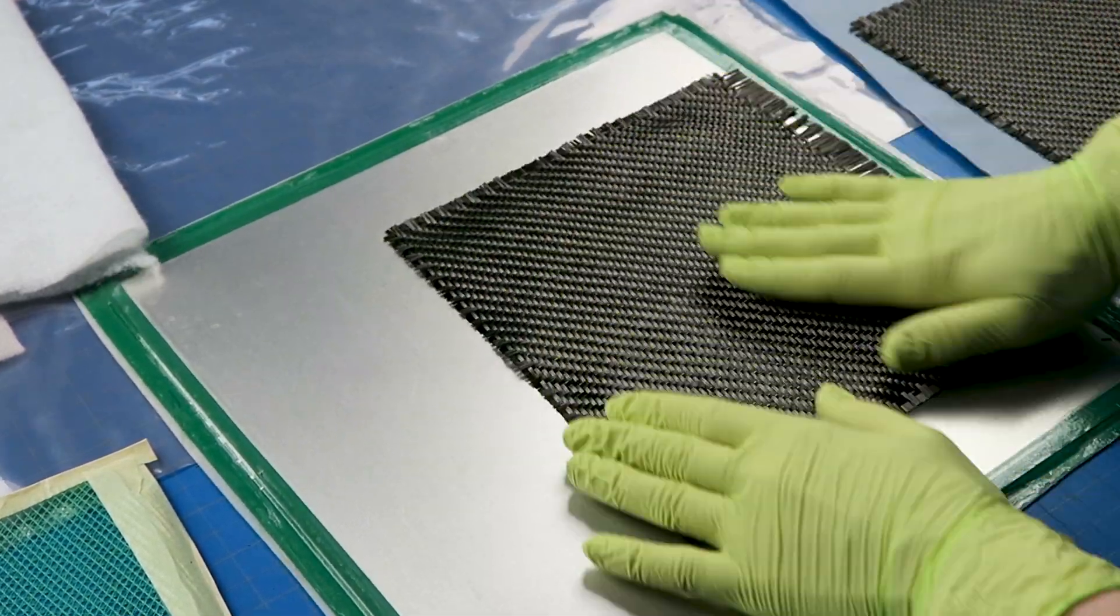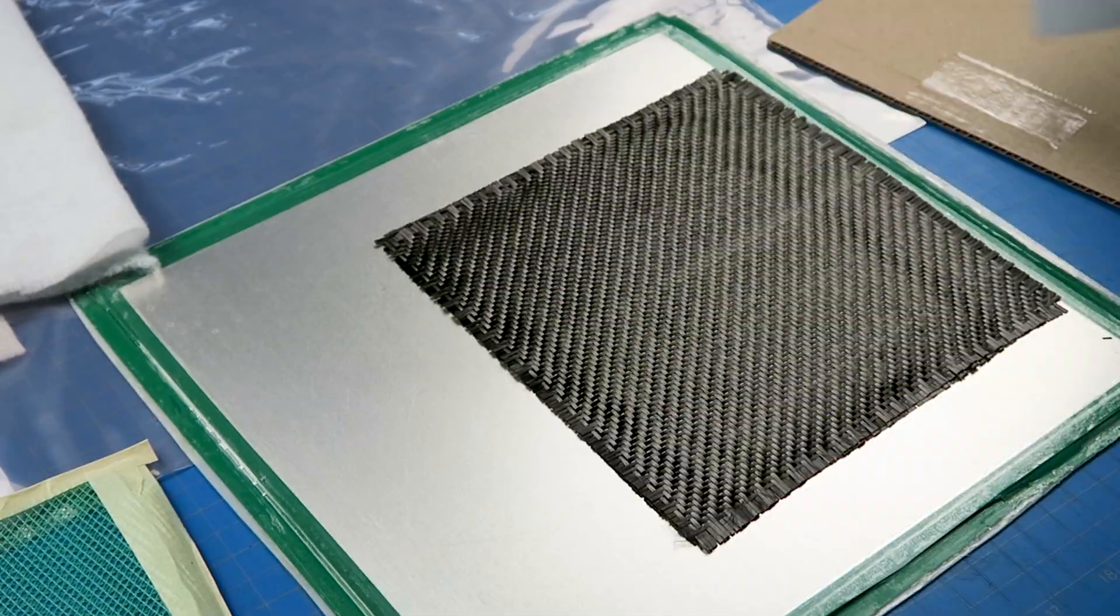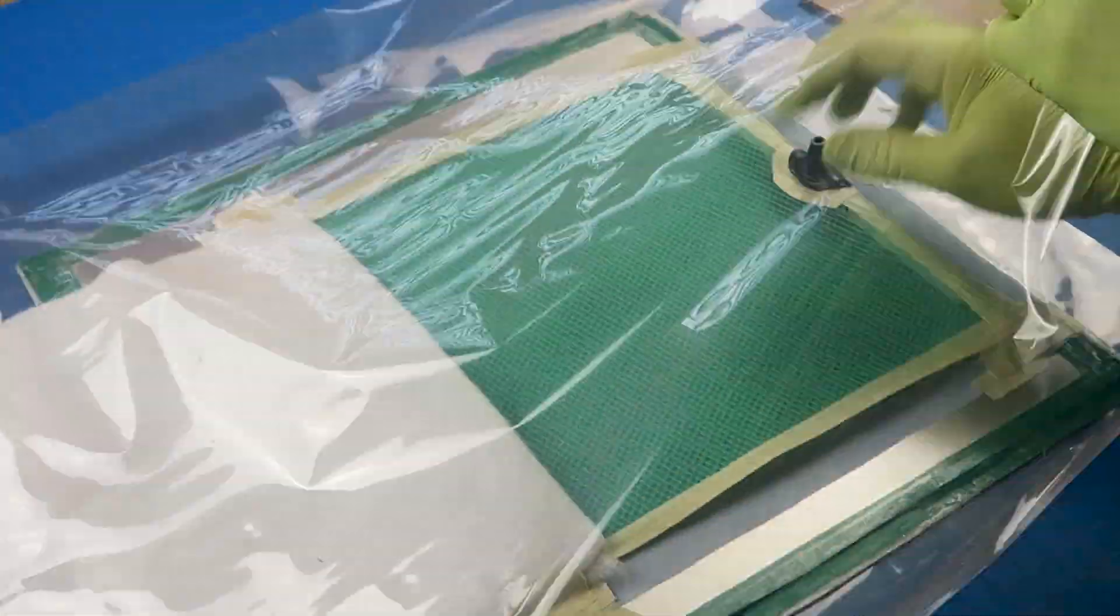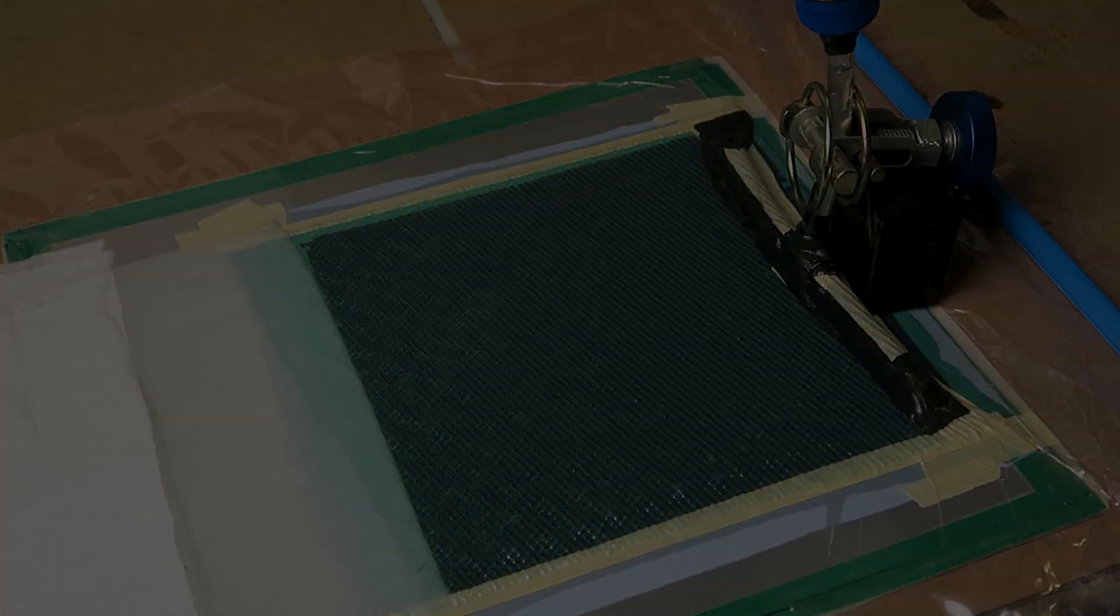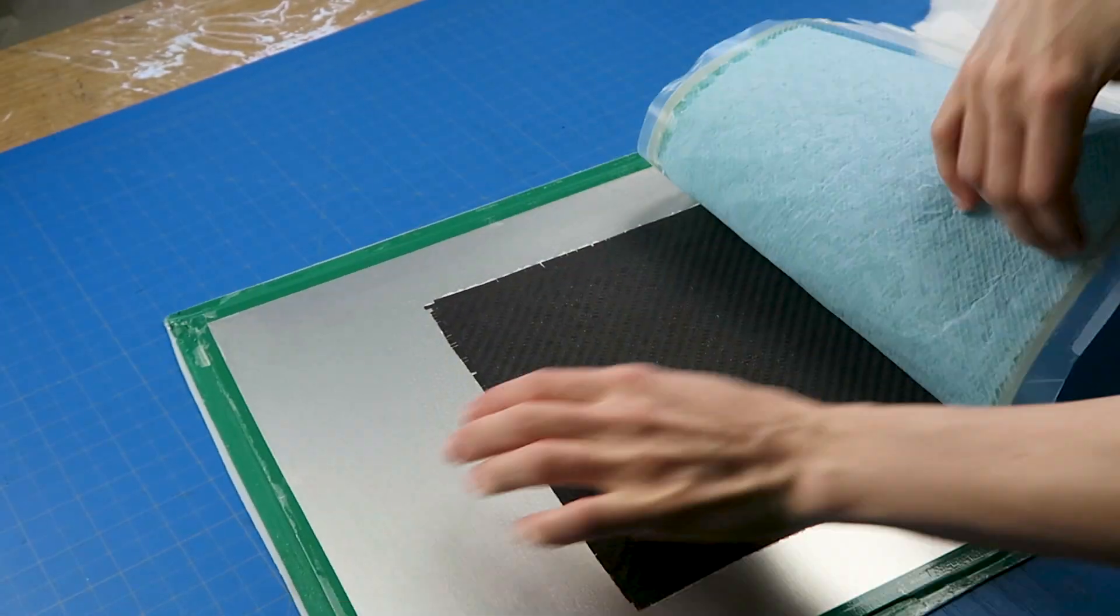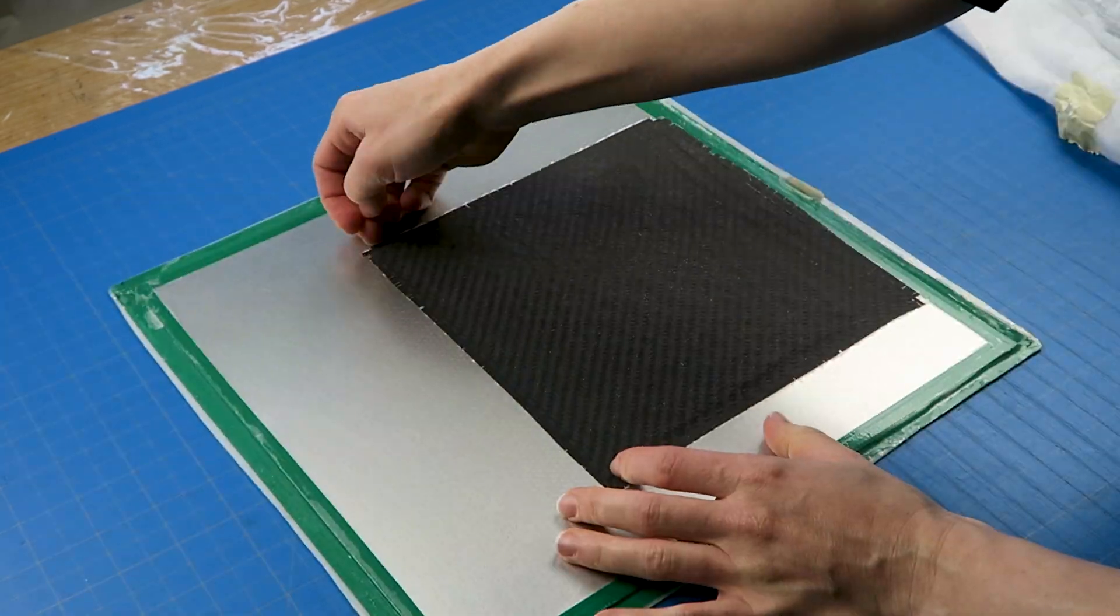I put this onto a sheet and vacuum infused it to see what sort of results I would get there, and I backed that with some twill fabric. You can just use it as a surfacing finish and then add whatever fabric at the back for added strength and bulk, or you could just add more forged at the back.